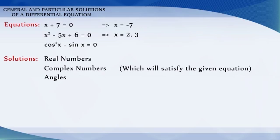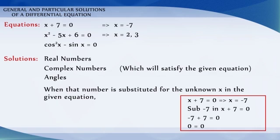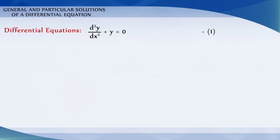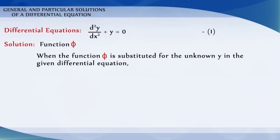That is, when that number is substituted for the unknown x in the given equation, the left hand side becomes equal to the right hand side. Now, consider the differential equation d squared y by dx squared plus y is equal to 0. The solution of this differential equation is a function phi that will satisfy it — that is, when the function phi is substituted for the unknown y in the given differential equation, the left hand side becomes equal to the right hand side.